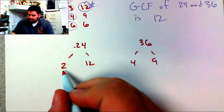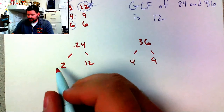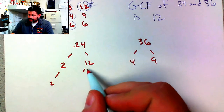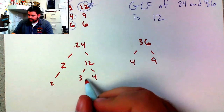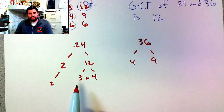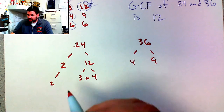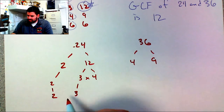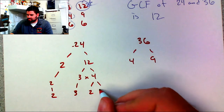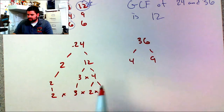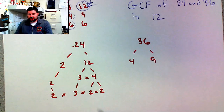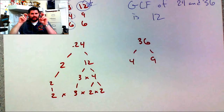For 24: 2 is already prime, so I bring it down. 12 factors into 3×4; 3 is prime, so I bring it down, and 4 factors into 2×2. So the prime factorization of 24 is 2×3×2×2. If I multiply all those together, I get 24.